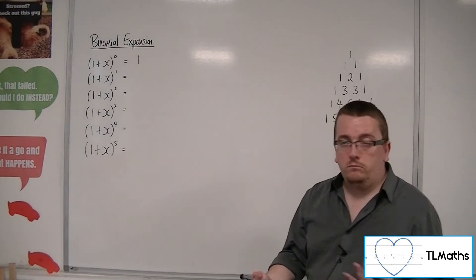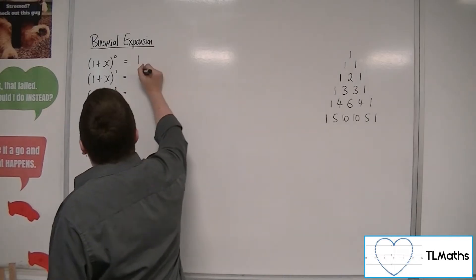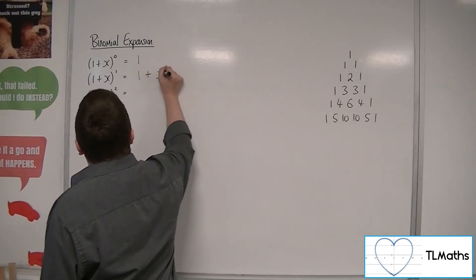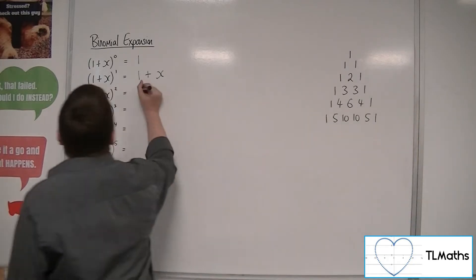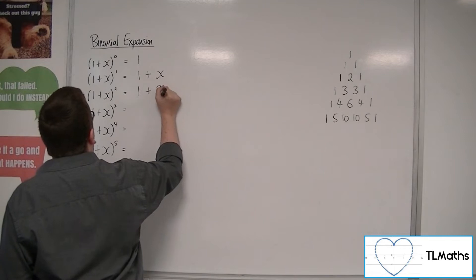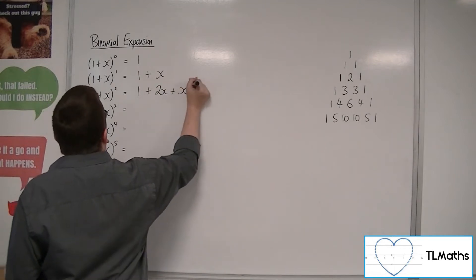(1+x)^1, well, that would just be 1+x. Right? Now (1+x)^2, well, that's 1+2x+x^2.